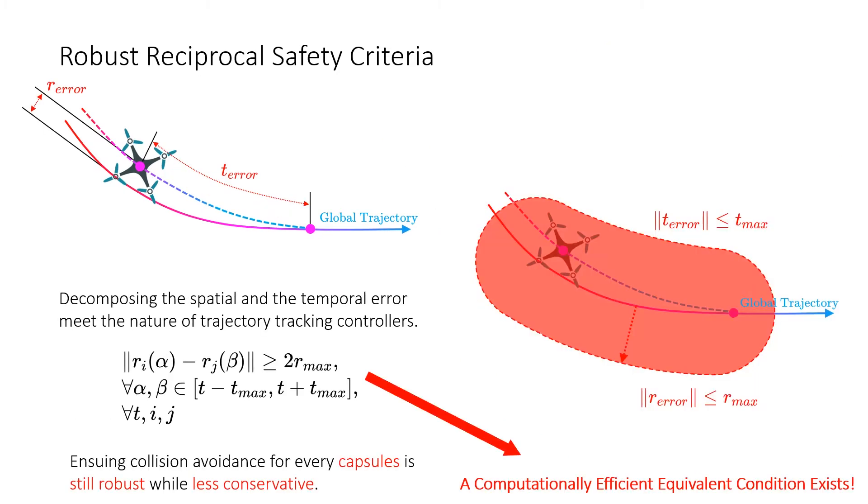We decompose the tracking error into spatial and temporal parts, considering the nature of tracking controllers. The spatial error is the closest distance from a vehicle to the curve. The temporal error is a duration between the stamp of the closest point and that of the reference one. Their uncertainties form a capsule-like volume instead.